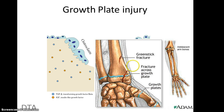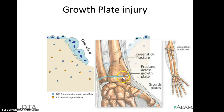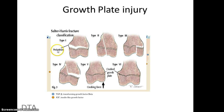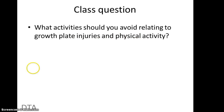Green stick fractures occur along the long bone, but very often fractures occur at the growth plate. If you've fallen and injured the end of your wrist or ankle, that's because the growth plate is the weakest point. The Salter-Harris fracture classifications define different types — type one through to six — and these occur on a more regular basis. When thinking about physical activity, you must bear in mind the age and bone development of the person taking part. The class question is: what activities should you avoid in relation to growth plate injuries and physical activity?